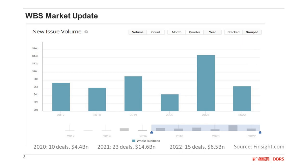These structures typically feature interest reserves and other credit enhancements to cover interest over a certain period, and a backup manager is in place. As an additional data point from SIFMA, there is at least 35 billion of franchise-related ABS outstanding as of the end of 2021.